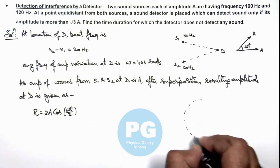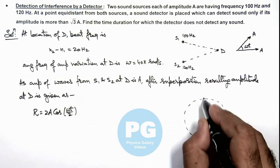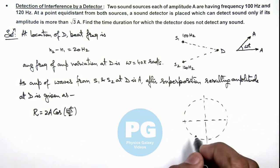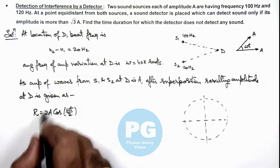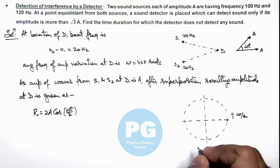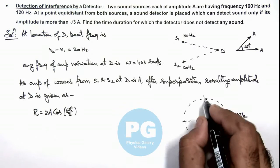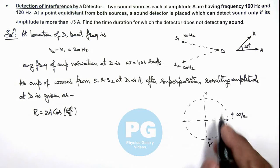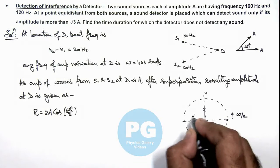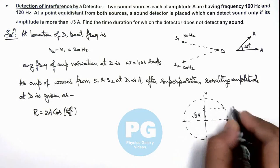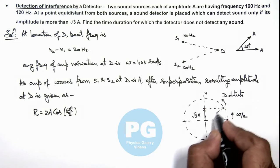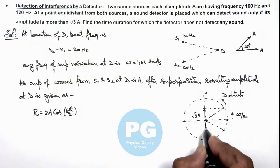If we represent the amplitude on a circle, we can see the resulting amplitude is oscillating. The maximum amplitude is 2A and its value is cos(ωt/2), so the particle is considered to be oscillating with angular frequency ω/2 and the resulting amplitude will oscillate on the diameter Y-Y'. We are given that the detector detects sound only if amplitude is more than √3·A, meaning whenever the amplitude goes beyond √3·A the detector will detect sound.